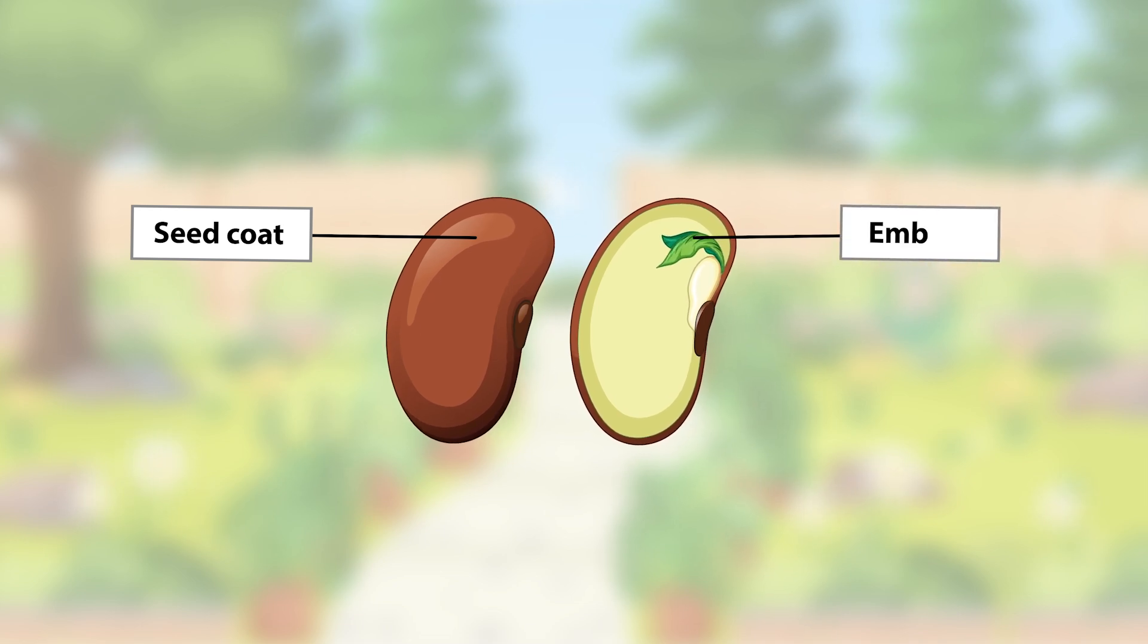Inside the coat is a tiny plant called an embryo, which is the beginning of what will become the roots, stems, and leaves.